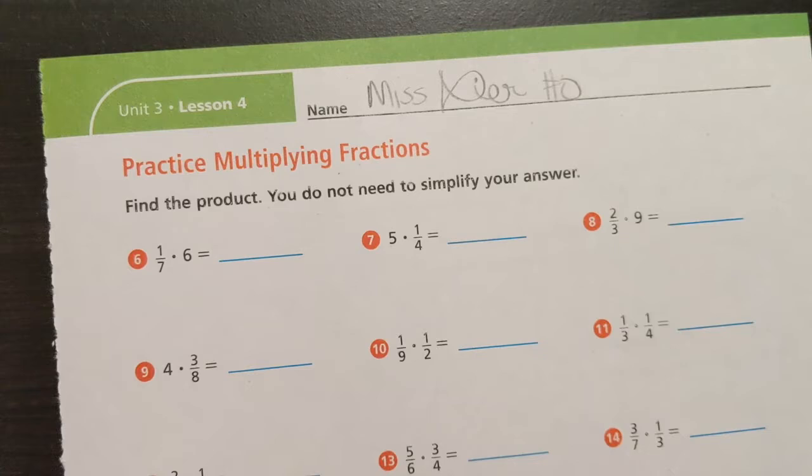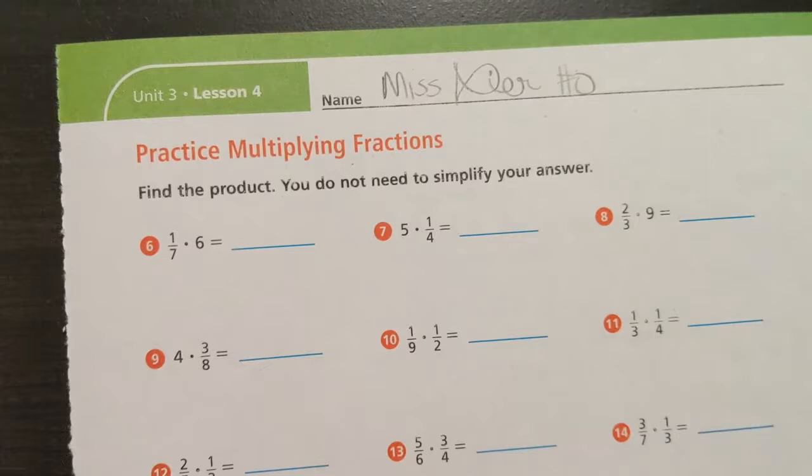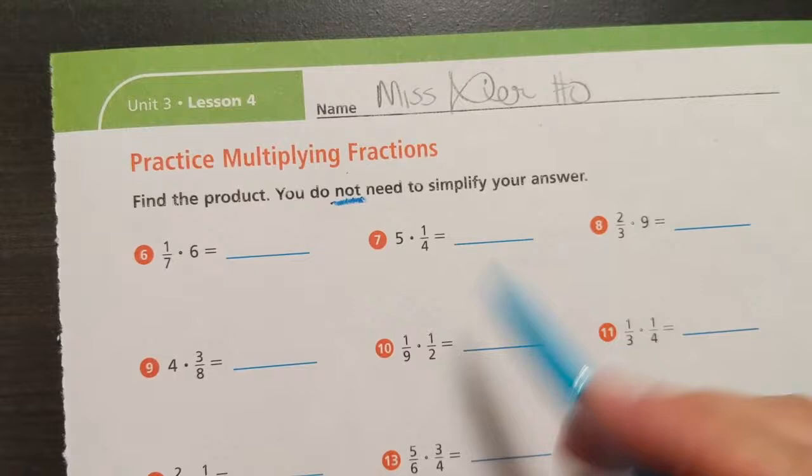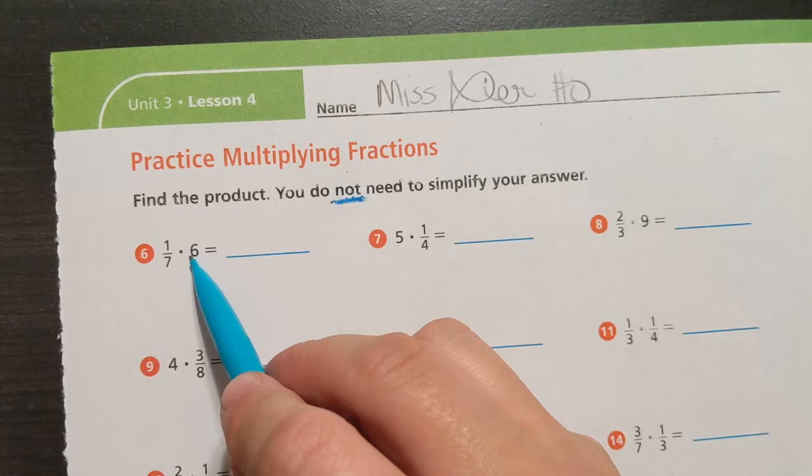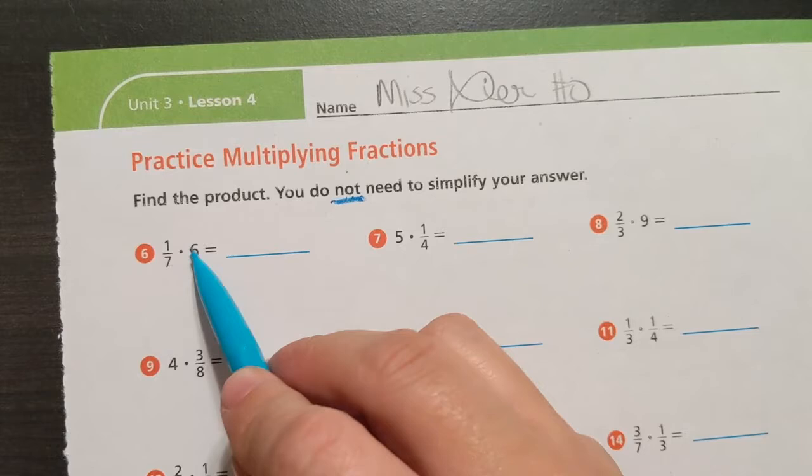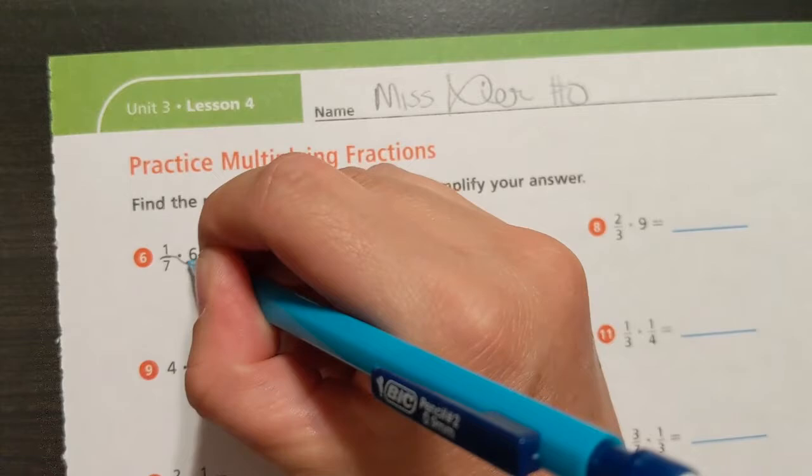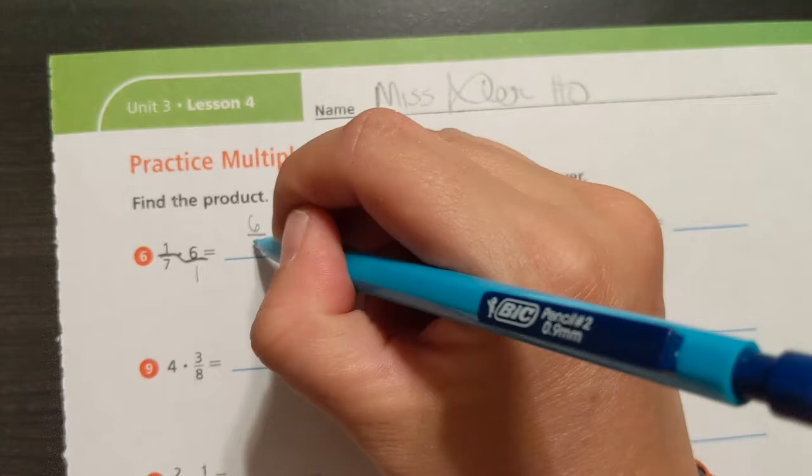Number six. One seventh times six. It says find the product. You do not use your blue here. You do not need to simplify. Look, there's not room to model all these. So we're just going to do it. Oh, this is like from a couple of days ago. What do you do when you're trying to multiply by a whole? Well, you see, is the denominator in a fact family? Like how did I get from seven to six? No. So now you just throw one underneath it. You extend the bar. Remember, you connect them and you multiply straight across. One times six is six. Seven times one is seven. Final answer. Six sevenths.